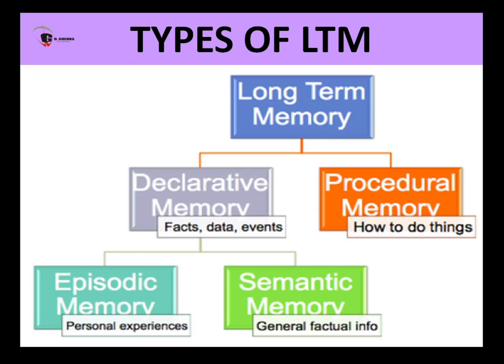For example, how many tires does a car have, or maybe a rickshaw, or maybe a bus. Or probably some important historical dates, such as when India actually became independent, or some important facts of science. So all of that is actually getting stored in this type of memory.